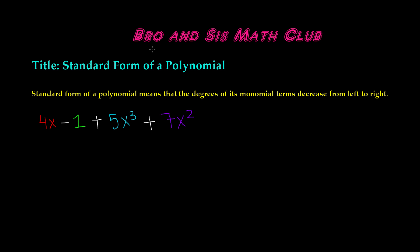The standard form of a polynomial means that the degrees of its monomial terms decrease from left to right. Here we have a polynomial which is 4x minus 1 plus 5x cubed plus 7x squared.